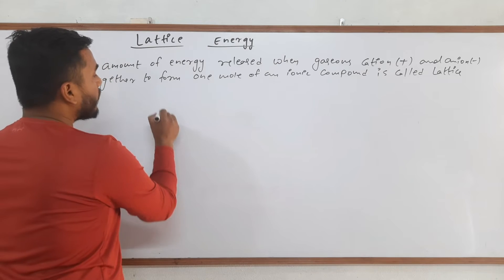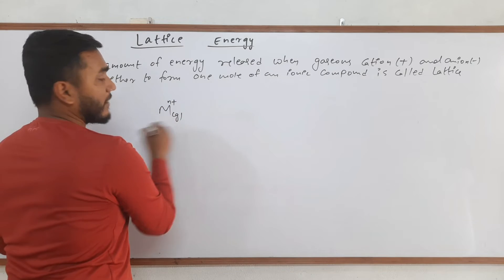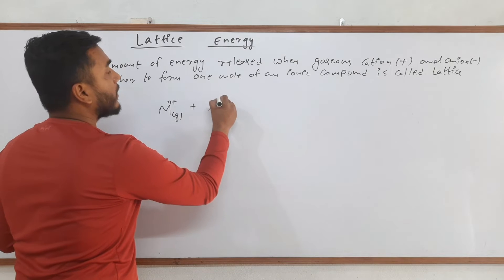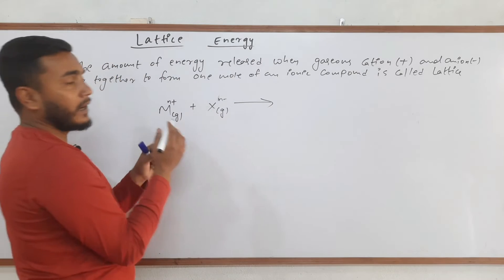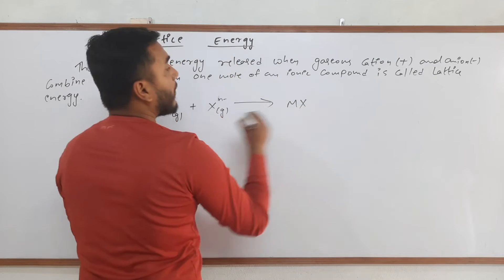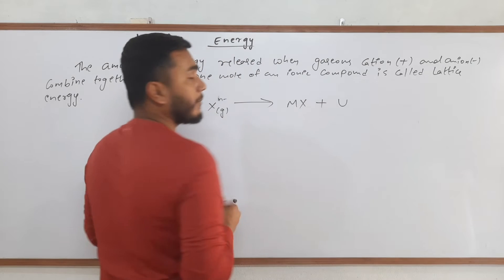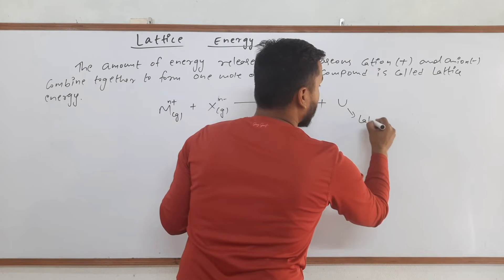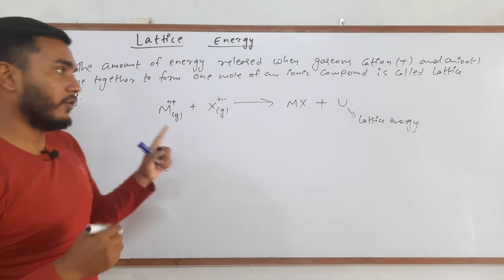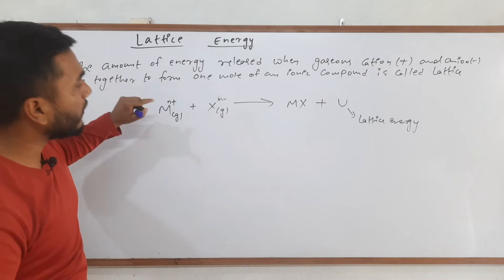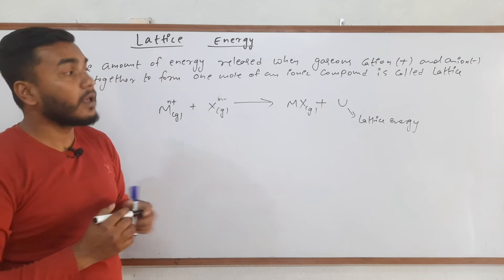Let us take an example. Suppose we have M, that is a metal cation in gaseous state, and a non-metal anion in gaseous state as well. When they combine to give the ionic compound, some energy is released. That energy is called lattice energy, denoted by U. In many books you will find lattice energy represented by LE. It is a very simple concept — whenever a gaseous cation and gaseous anion combine to form an ionic compound, some energy is released.